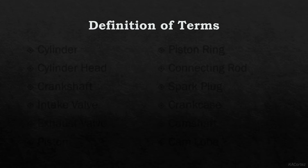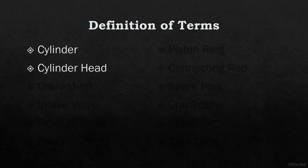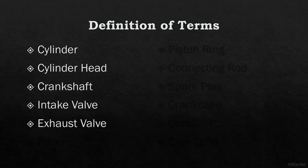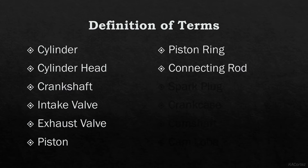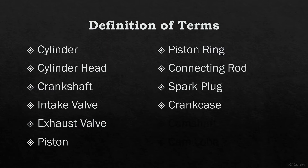Here are some terms that are commonly used in the discussion of the reciprocating engine: cylinder, cylinder head, crankshaft, intake valve, exhaust valve, piston, piston ring, connecting rod, spark plug, crank case, camshaft, and cam lobe.